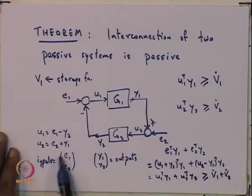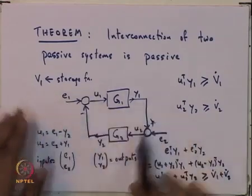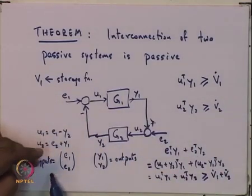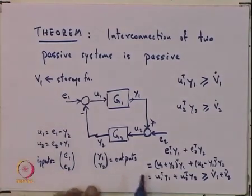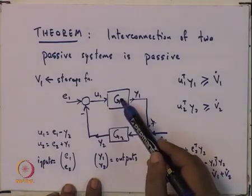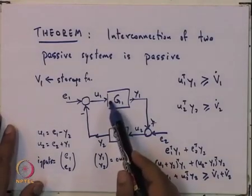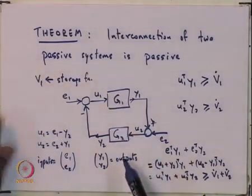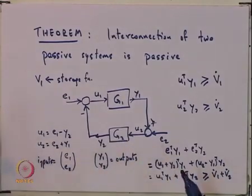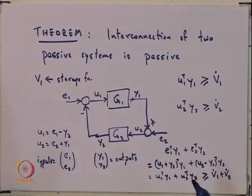This means that if you take this E1 and E2 as the inputs for the interconnected system and the Y1 and Y2 as the output, so for this interconnected system, when you look at the inputs multiplying the outputs, this is greater than equal to the rate of change of a storage function, which is in fact the sum of the storage function of the first one and the second one. So in physical systems, if this was a physical system and it had some elements which stored energy and this is another system which has some elements which is storing energy, then the complete storage function is the sum of this storage function plus this storage function.